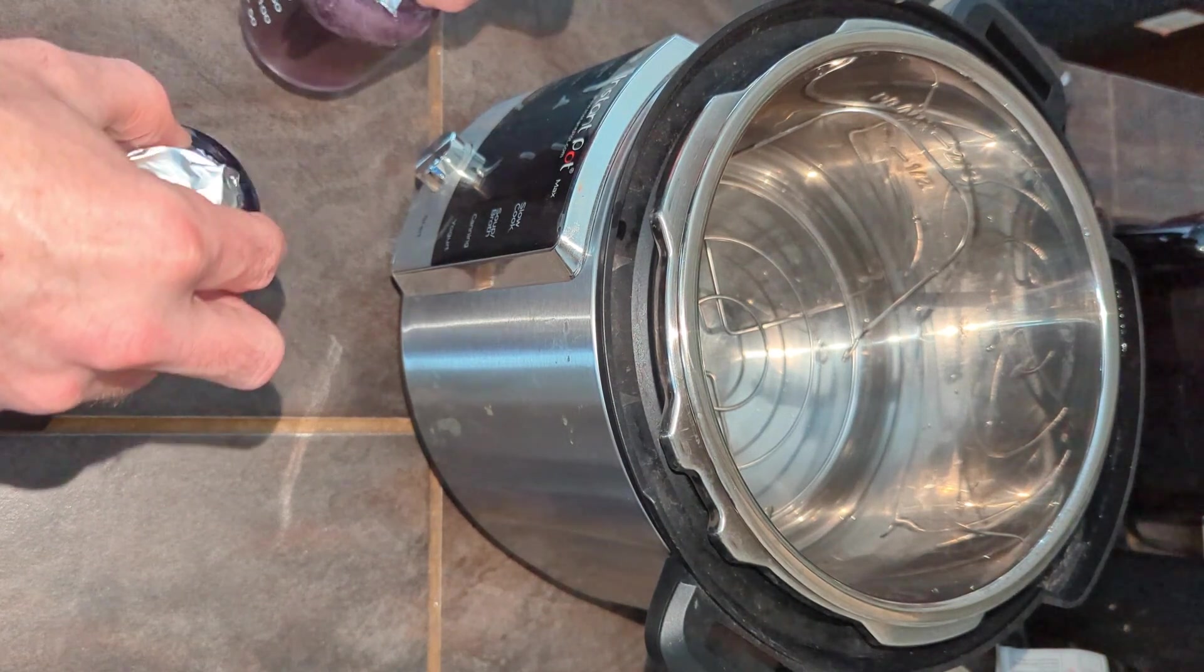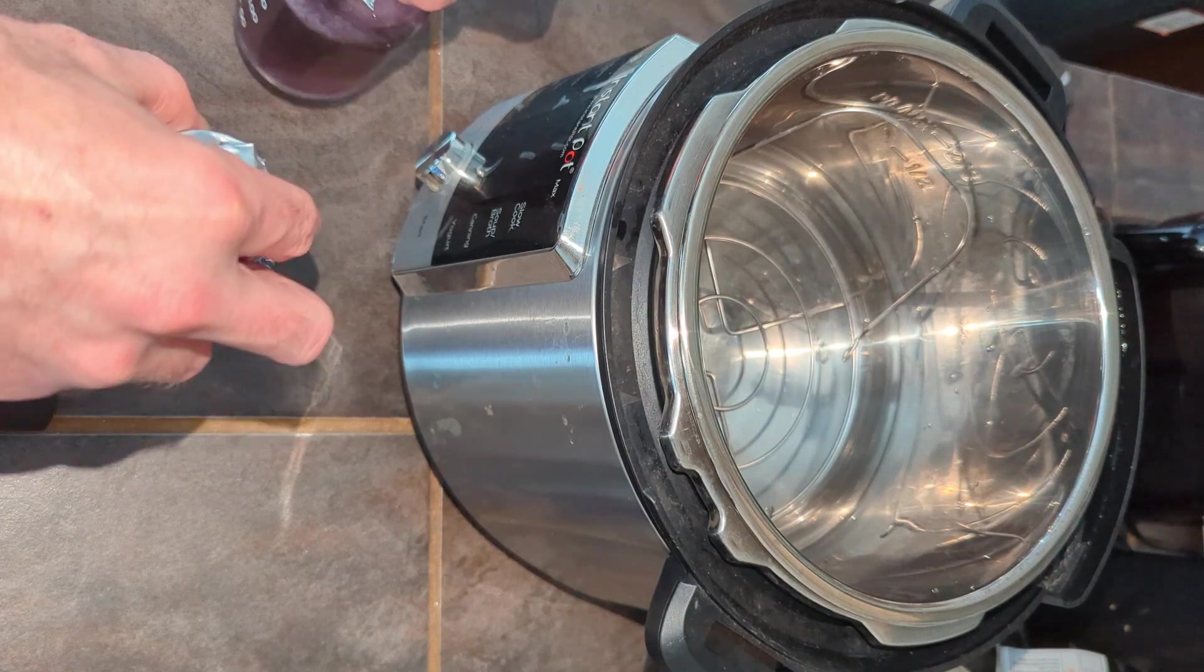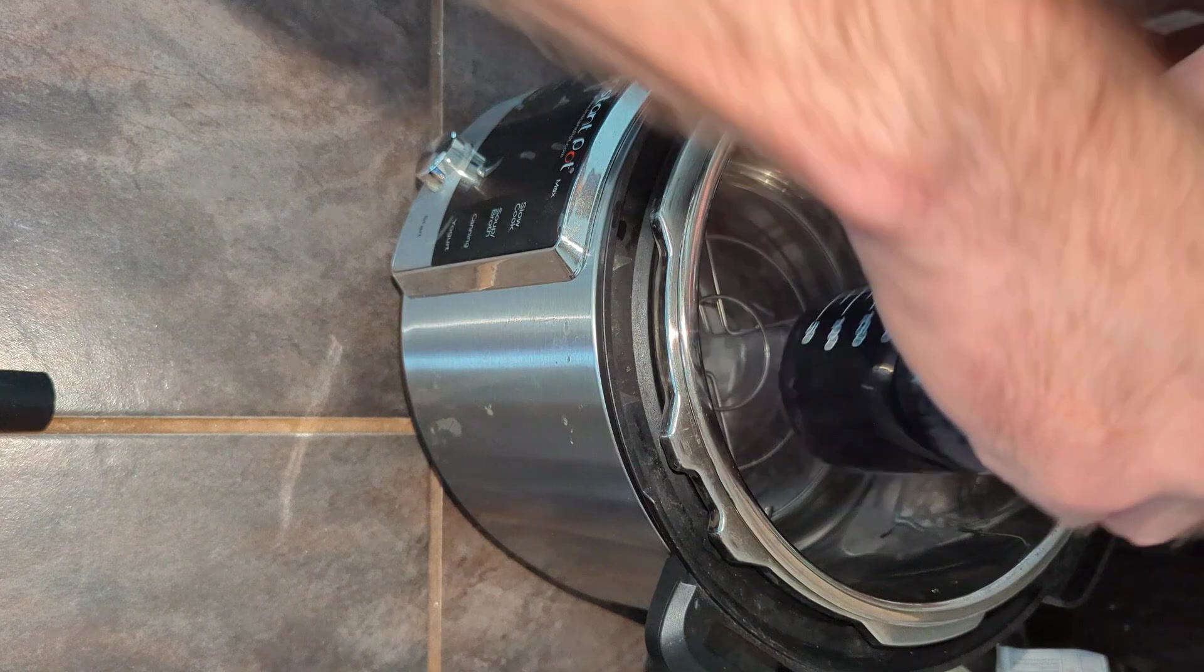If you have an instant pot, put water and a trivet in the instant pot. You want enough water to come up to the bottom of the jars. Put the lid on and pressure cook it for one hour.